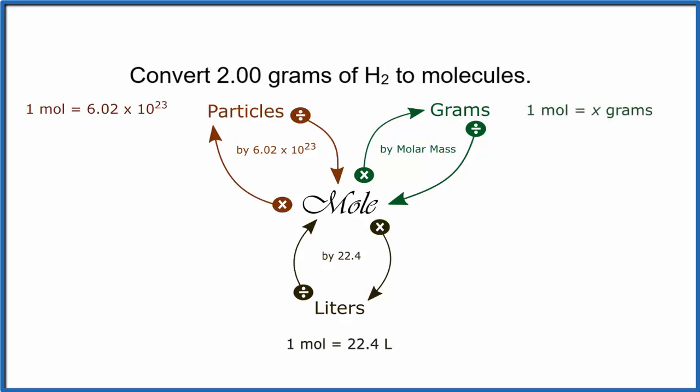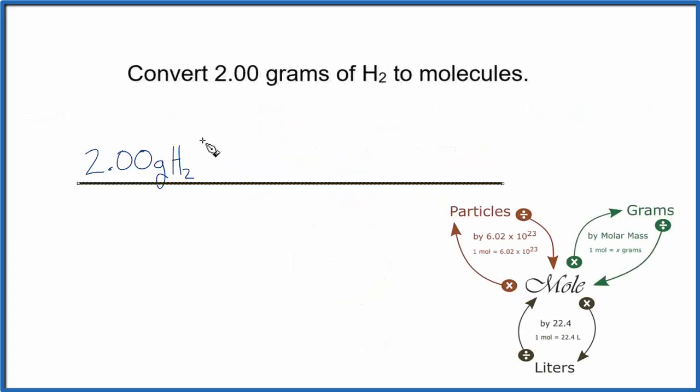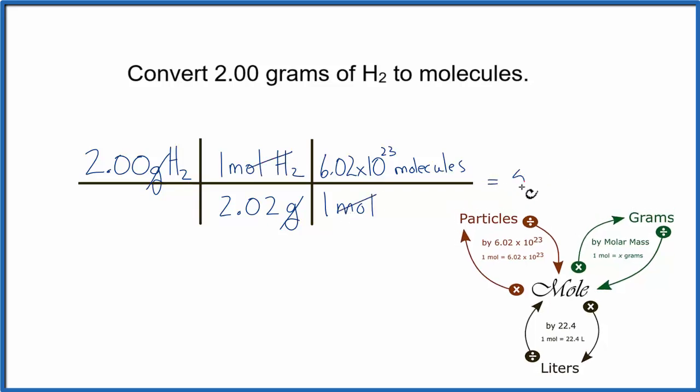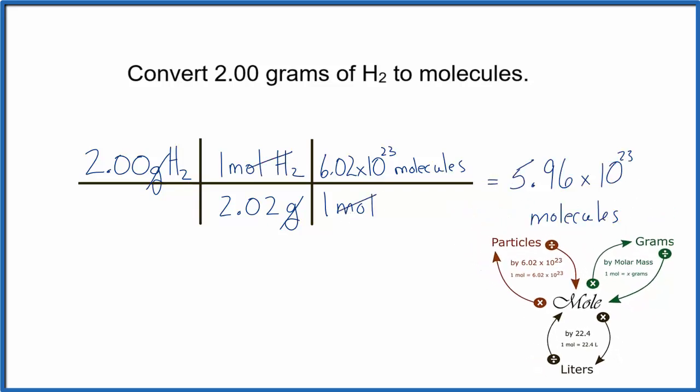So, whether you use the mole map to convert from grams to moles to molecules, or you set the conversion factors up, cancel your units, either way, 2.00 grams of H2 is 5.96 times 10 to the 23rd molecules.